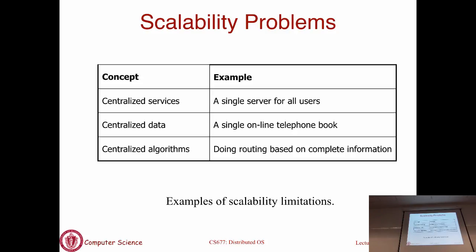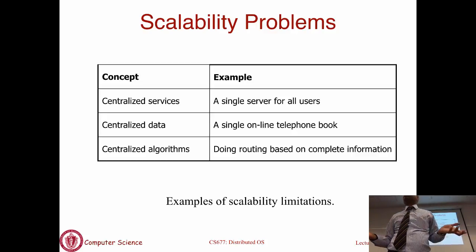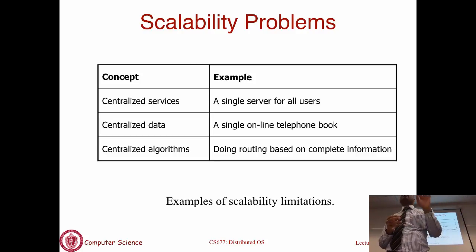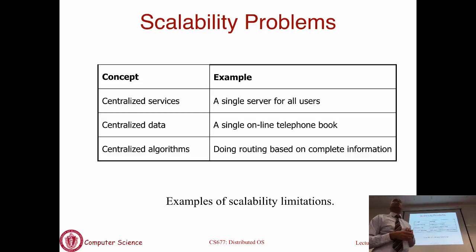Whenever you start thinking of an application, you should think about what you want to centralize and what to distribute. It doesn't mean that because you build a distributed application, all things have to be distributed. You might put all your data in a database but cluster the front-end web servers. You have to figure out what the bottlenecks in your system are and scale those up - the things you want to either replicate or distribute.